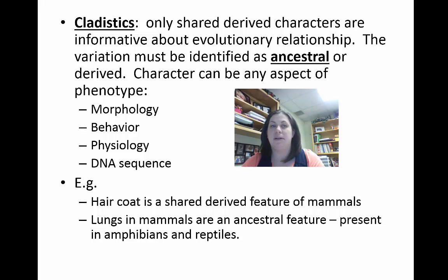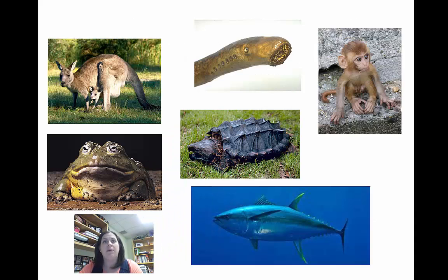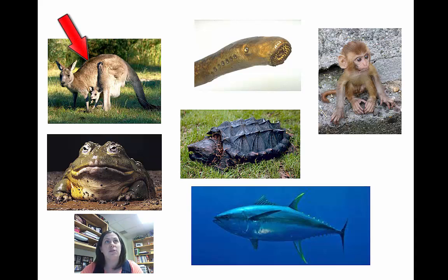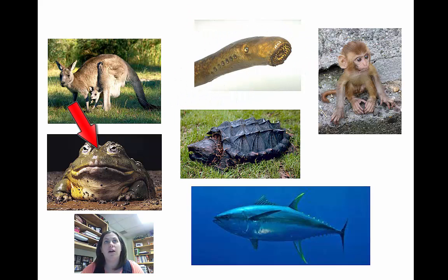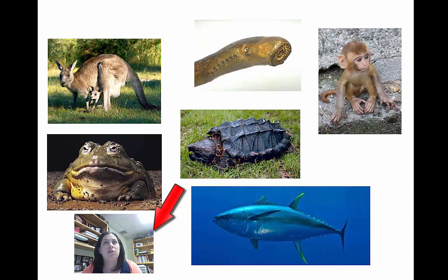Now let's look at your actual lab. It discusses several organisms and some characteristics. Looking at the organisms: you have the kangaroo, the lamprey — one you probably didn't know about — a rhesus monkey, a bullfrog, a snapping turtle, and a tuna. You'll notice there's no picture of a human, but you also have humans — you can look in the mirror since you're obviously a human. Now let's take a look at the chart that covers the different characteristics.